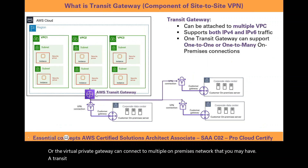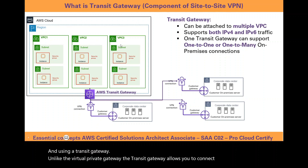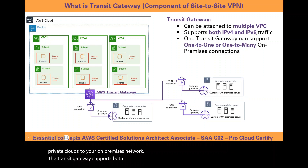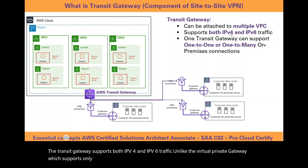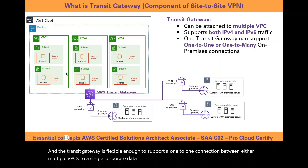A transit gateway is more like a hub. Unlike the virtual private gateway, the transit gateway allows you to connect multiple virtual private clouds to your on-premises network. The transit gateway supports both IPv4 and IPv6 traffic, and is flexible enough to support one-to-one connections between multiple VPCs to a single corporate data center or multiple VPCs to multiple corporate data centers.